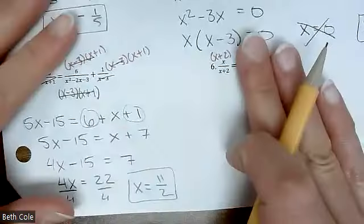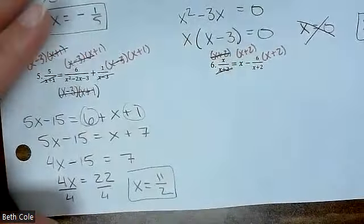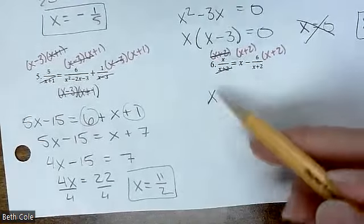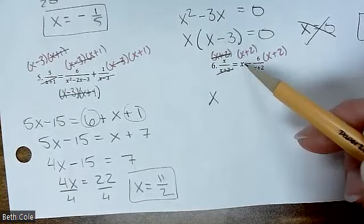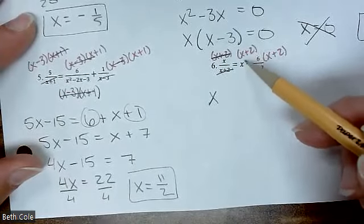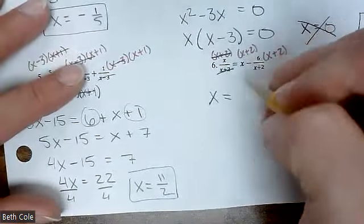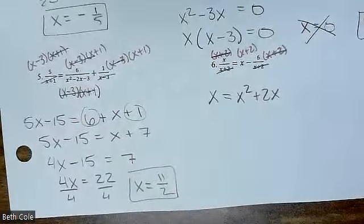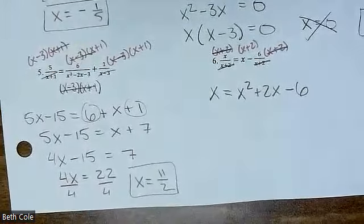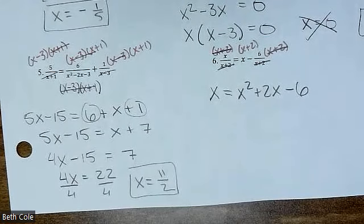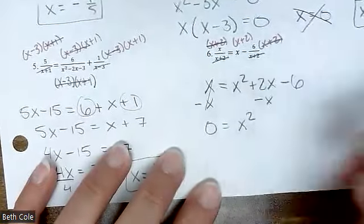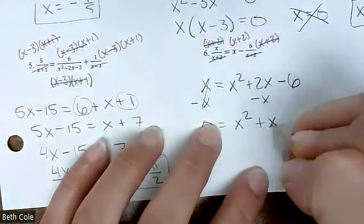What cancels in the first term? What are you left with? Just X. This next one, nothing cancels because it wasn't a fraction — so you have all of it. It's X times X plus two. When you distribute that X, you get X squared plus two X. And then the last one, those cancel and you're just left with minus six. Do you see an X squared? Yes — that means you're going to have to evacuate. Subtract this X over, make it equal zero so you can factor: X squared plus X minus six equals zero.